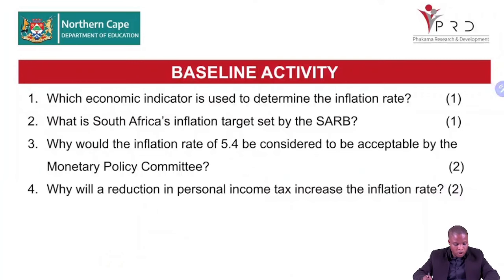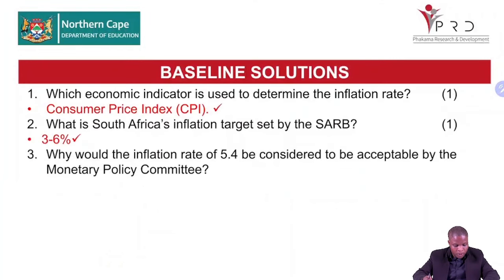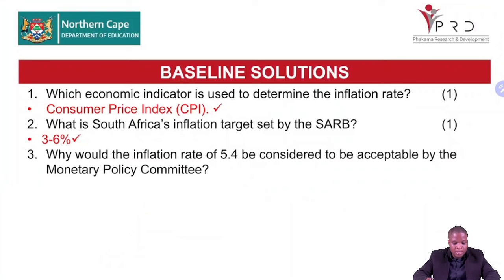All right, grade 12, your five minutes is over. The first question: which economic indicator is used to determine the inflation rate? This was discussed under indicators of economic pursuit. So the CPI — the Consumer Price Index — is used to determine the inflation rate.